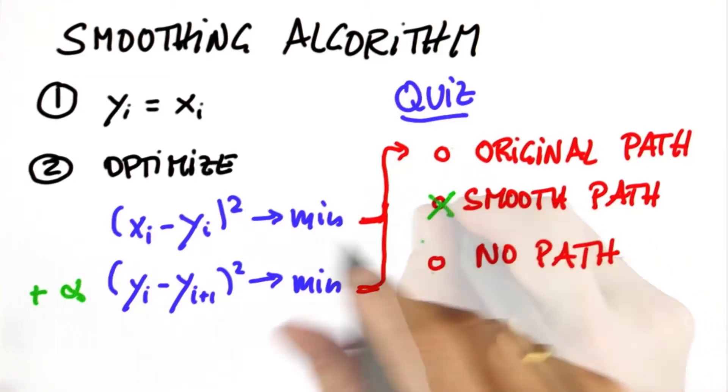And the answer is, we get a smooth path. To see why that's the case, let me just simulate the optimization.